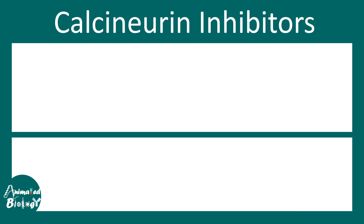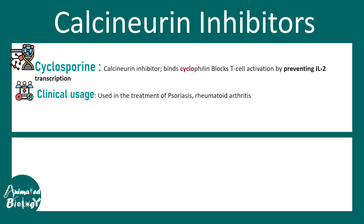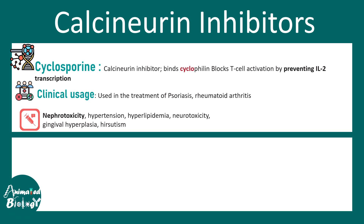To recap: cyclosporine is a calcineurin inhibitor which binds to cyclophilin and blocks T cell activation by preventing the transcription of interleukin-2. It is used for treatment of psoriasis, rheumatoid arthritis, and many other autoimmune disorders, but it has potent nephrotoxic effects. Additionally, gingival hyperplasia and hirsutism are associated side effects of cyclosporine.